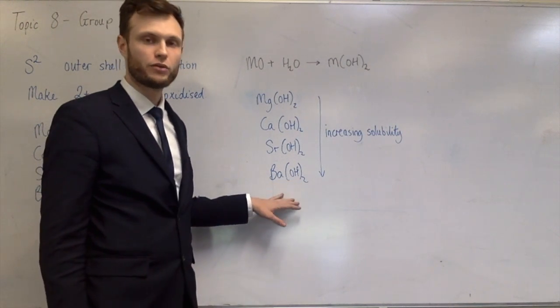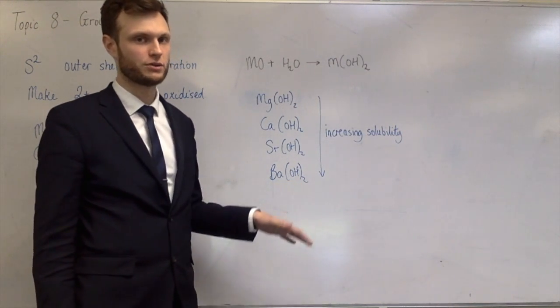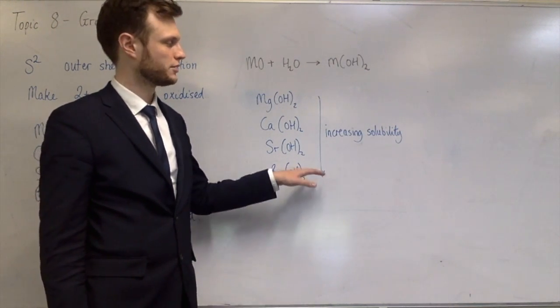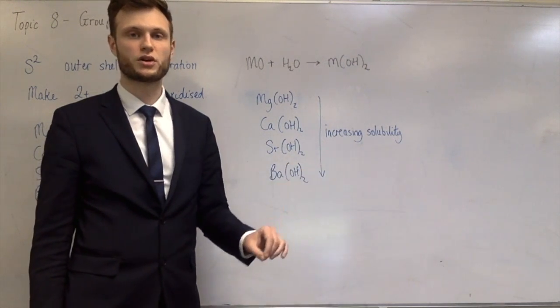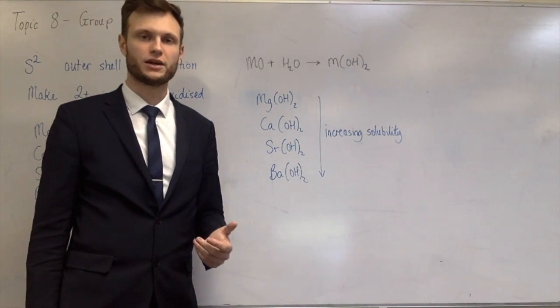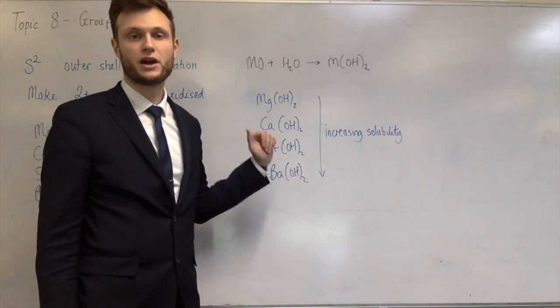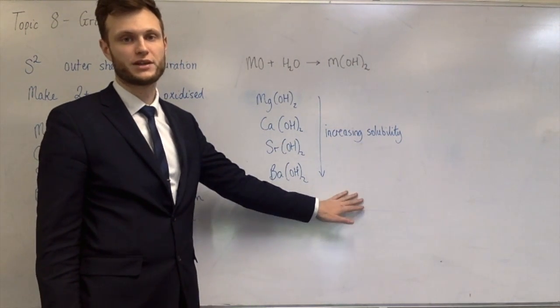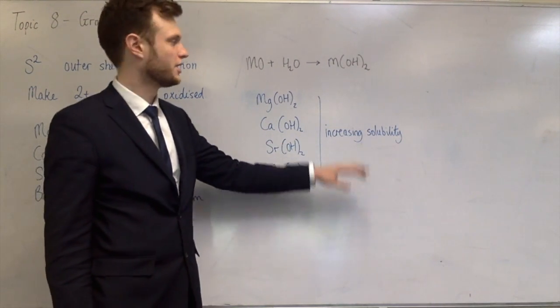They're all hydroxides, so they're all alkaline. The more soluble it is, the more hydroxide goes into the solution, and the more alkaline the solution will become. So the highest pH of any of these is going to be barium hydroxide, and magnesium hydroxide will have the lowest pH.